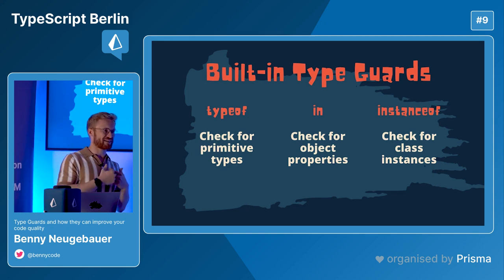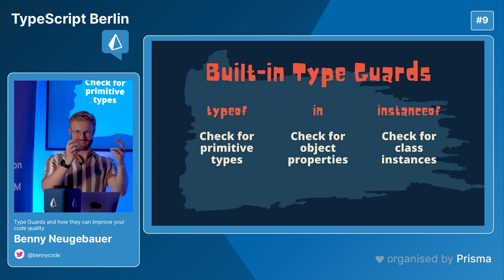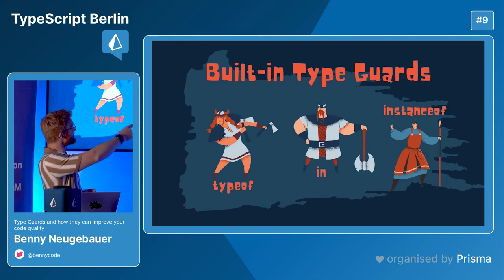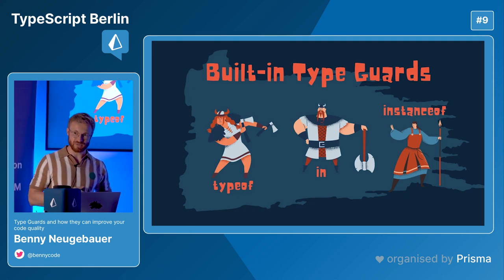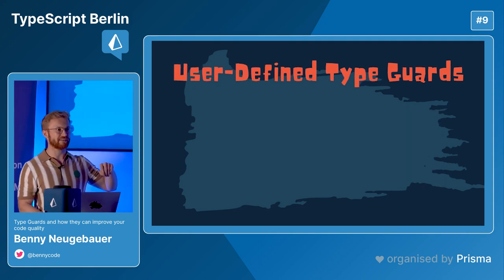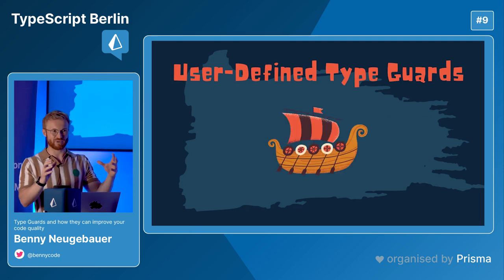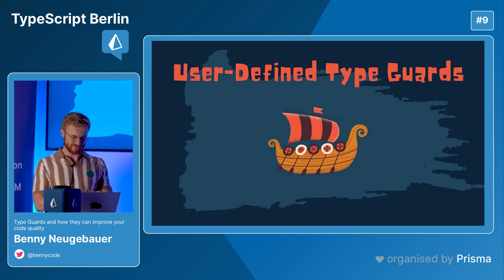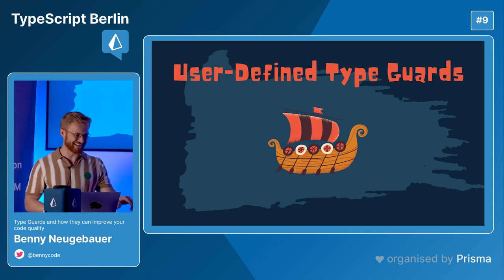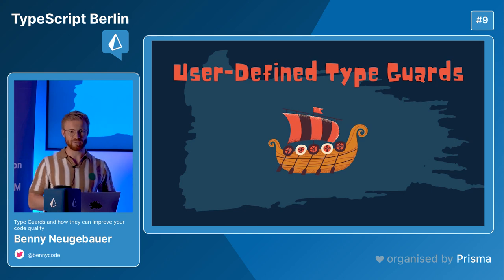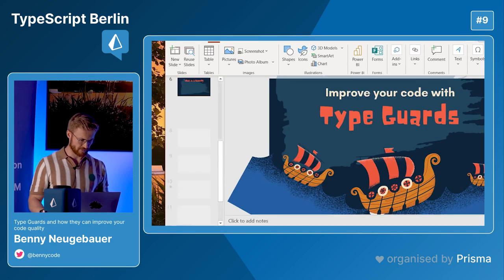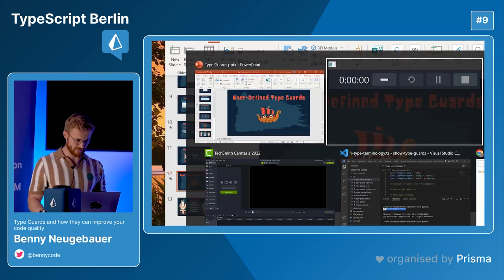If you're a visual person like me who likes to see things as a figure, type guards look like those three built-in options. You can also define your own — there's the possibility to have user-defined type guards, which gives you the possibility to build your own. That's also what I want to show today. I'll leave the slideshow and jump into VS Code because I brought some code examples, and we can check how it looks in VS Code and what IntelliSense will tell us about the types.